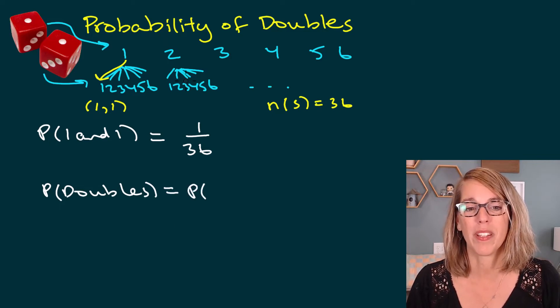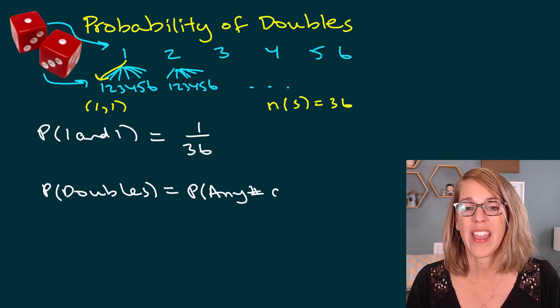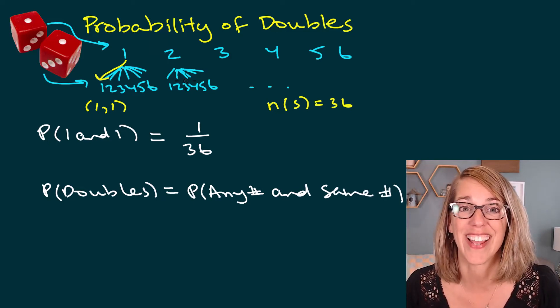That's going to be the probability of getting any number on the first dice, so any number, and the same number on the second dice.